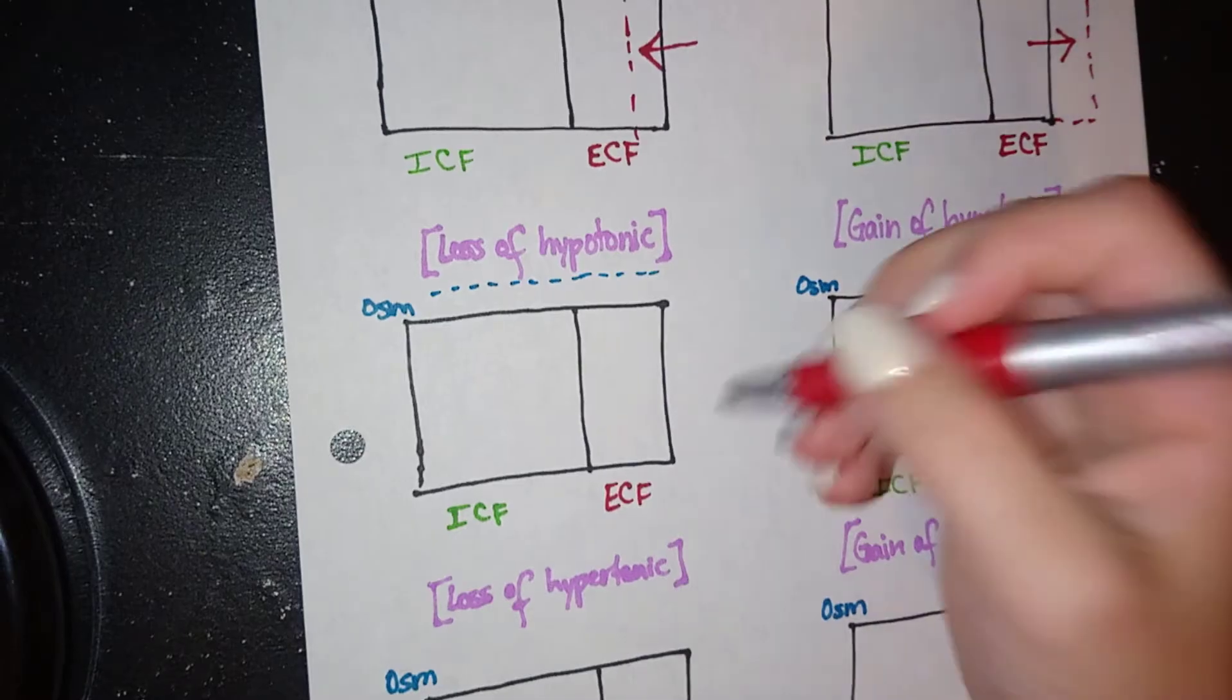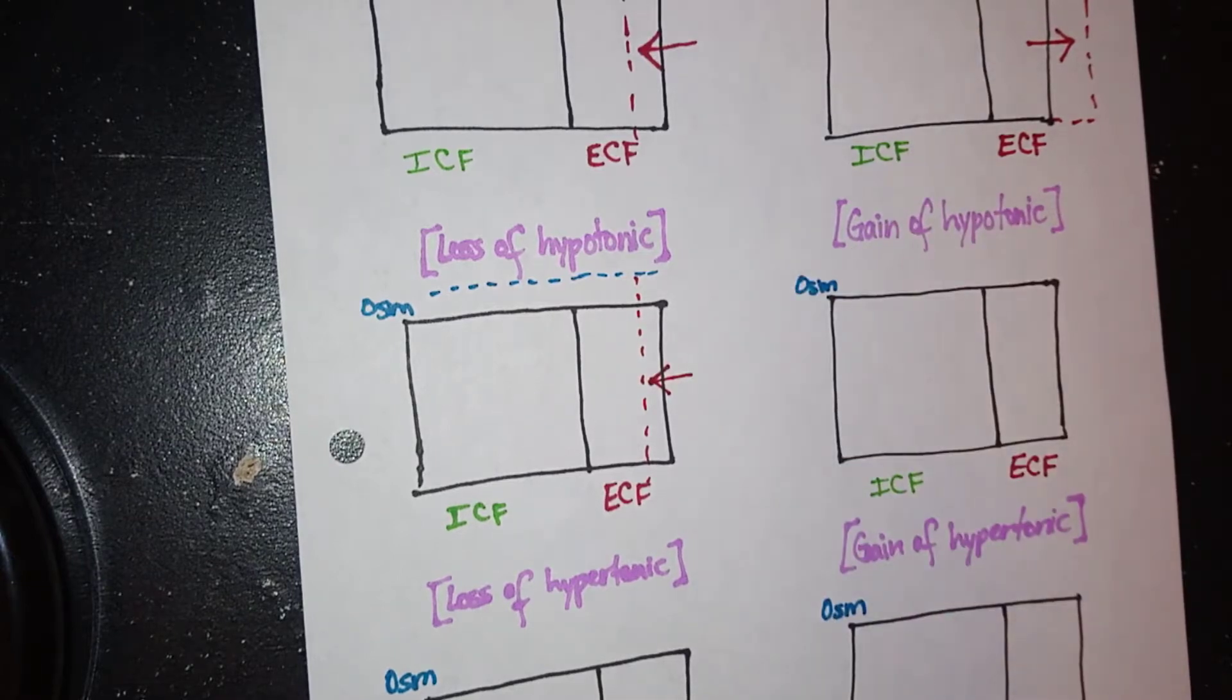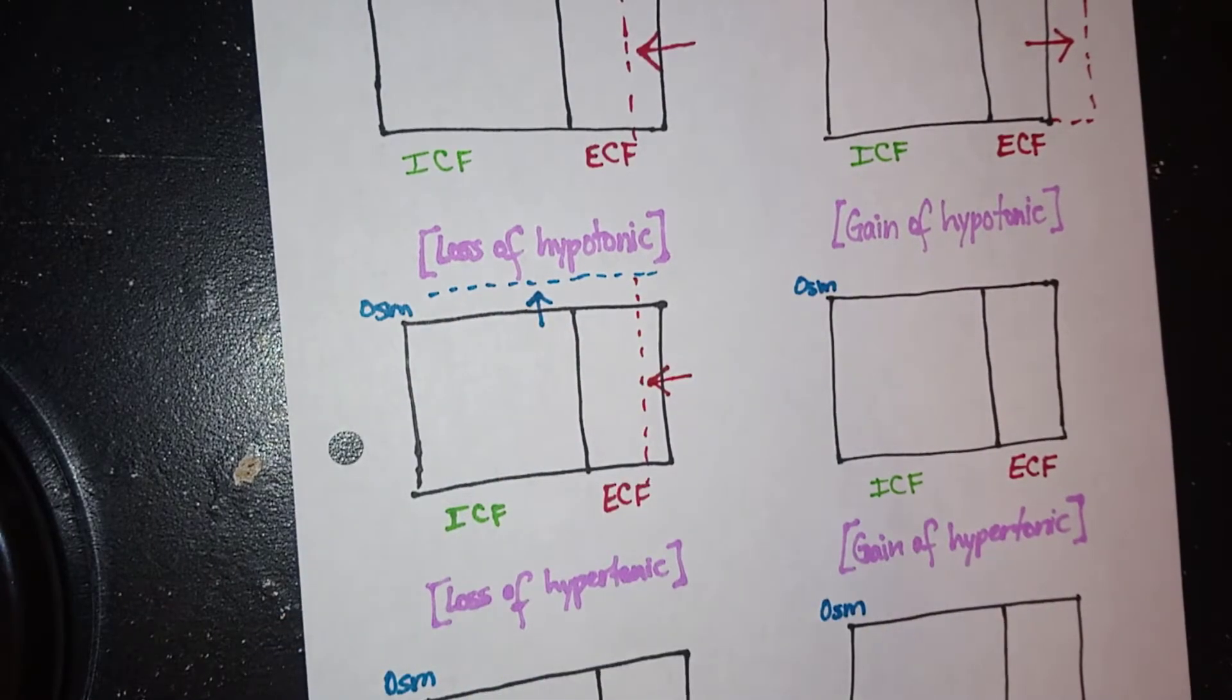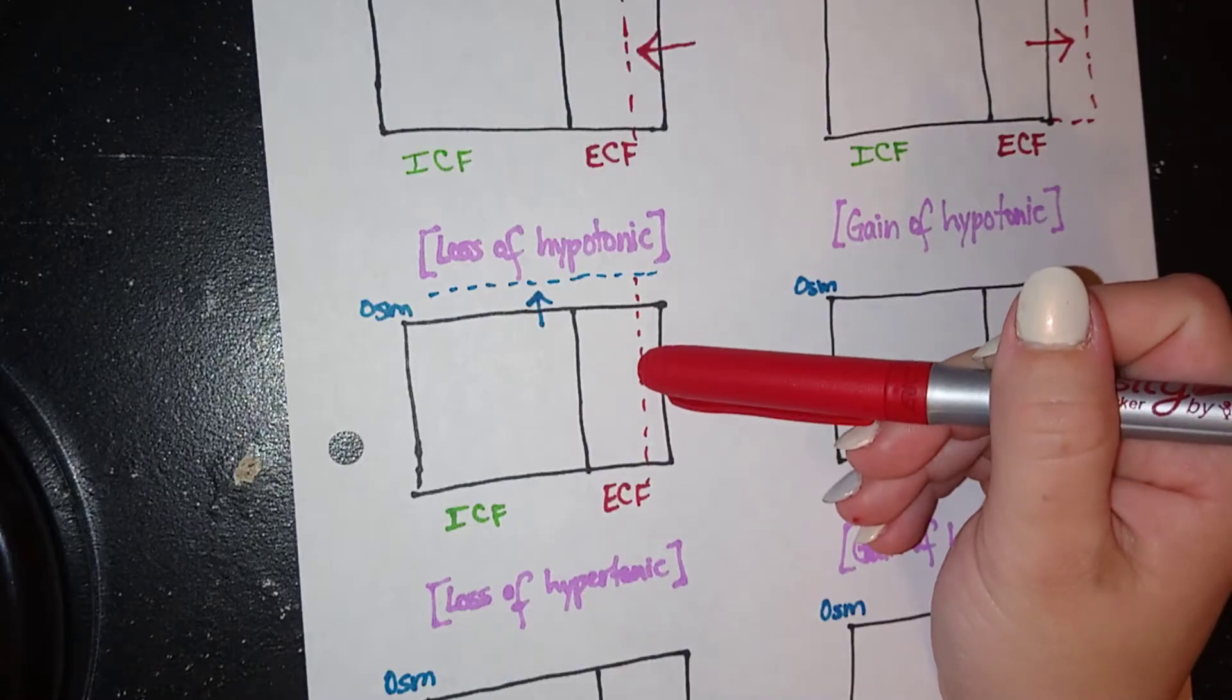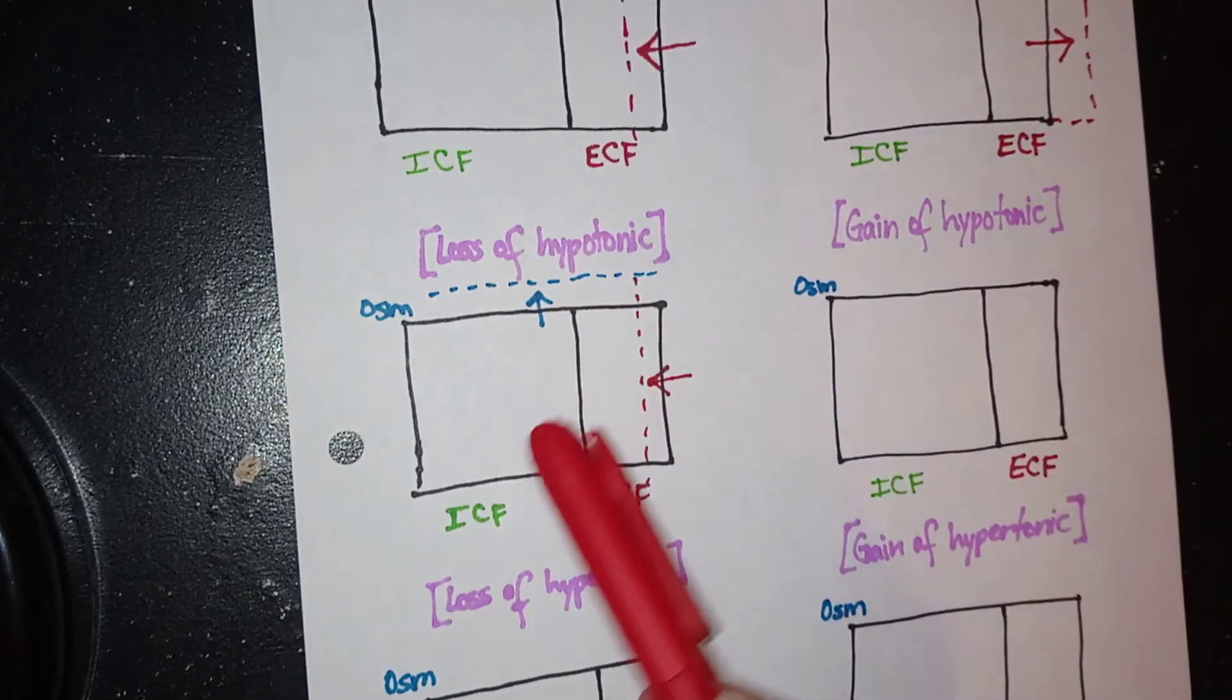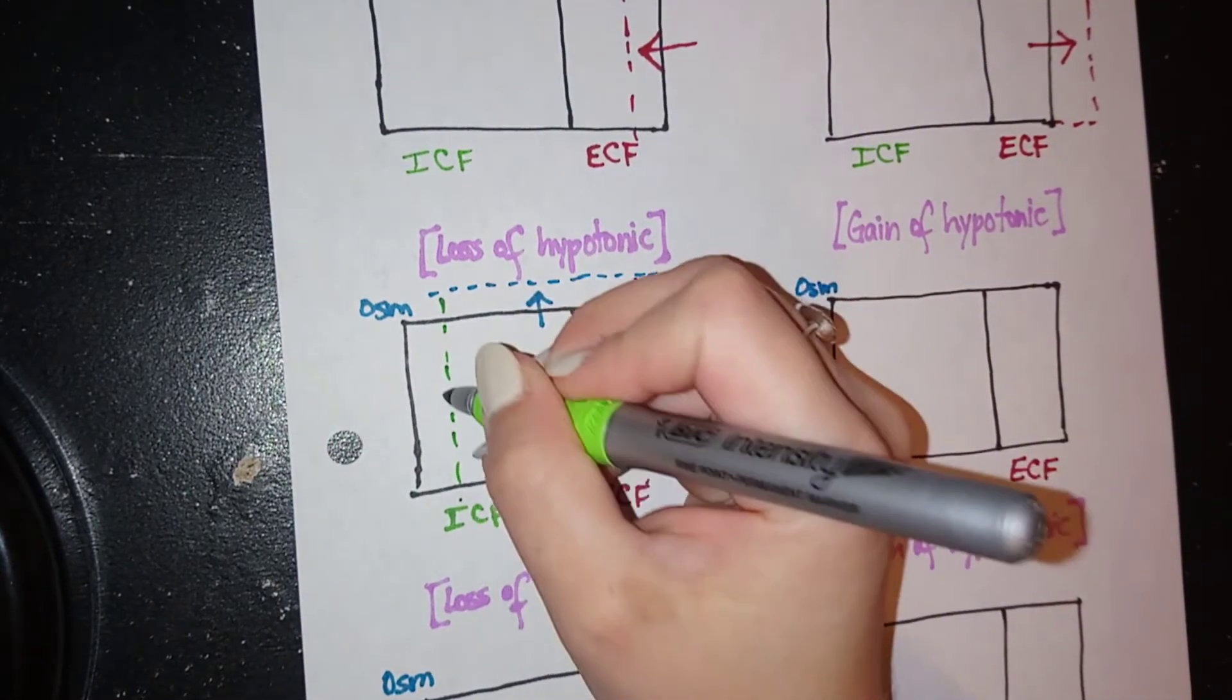Since we have lost water, that means that my ECF compartment is going to come down. And in this case in particular, since there was a change in osmolarity, the ECF is going to have lost water, but it needs more water to balance out all of this extra salt. So it's going to attempt to pull water from the next compartment, which is the ICF. So my ICF will now go down.